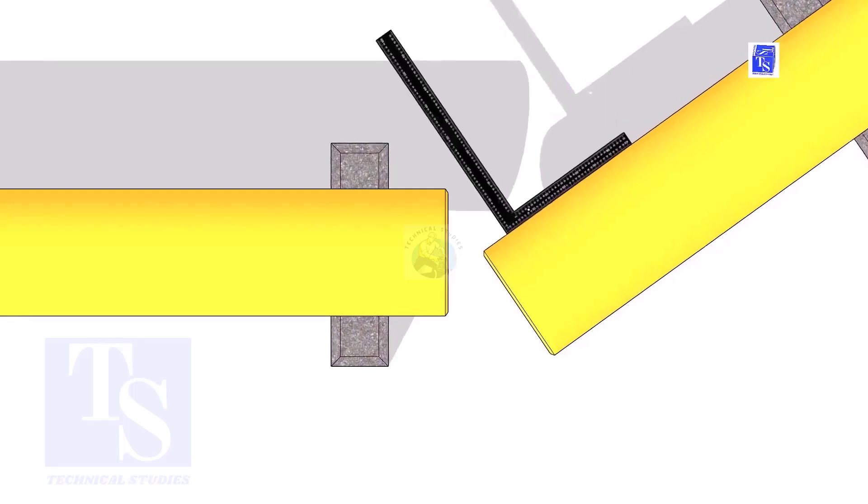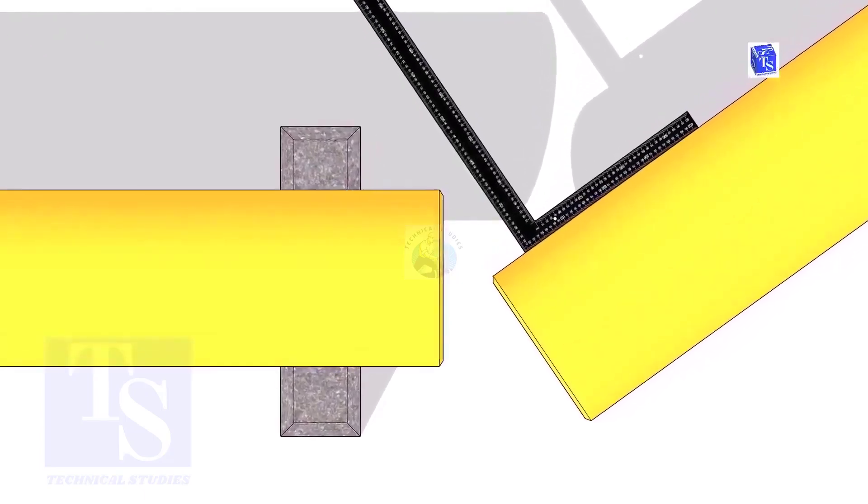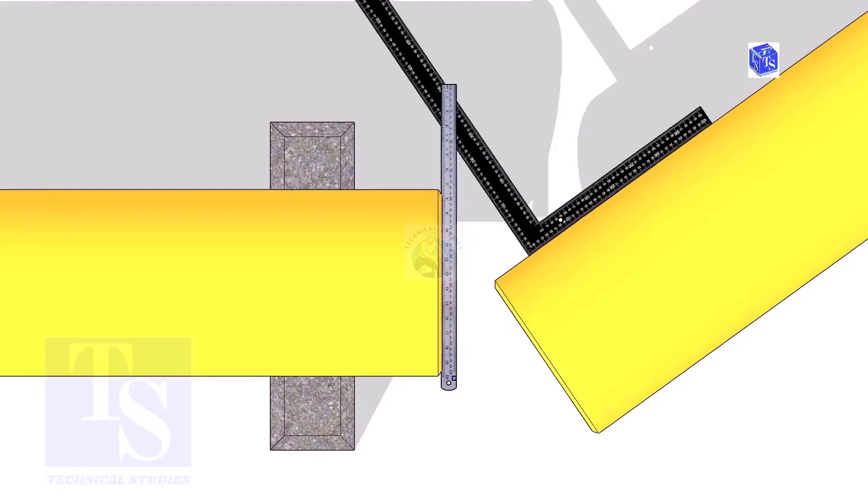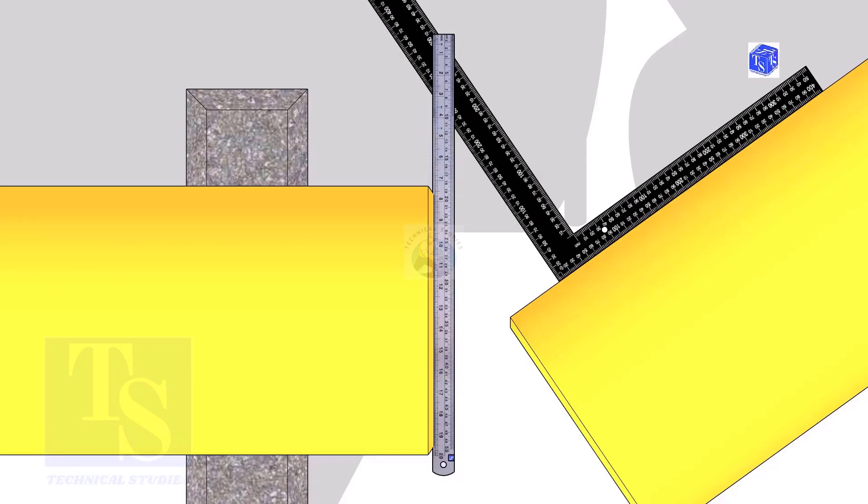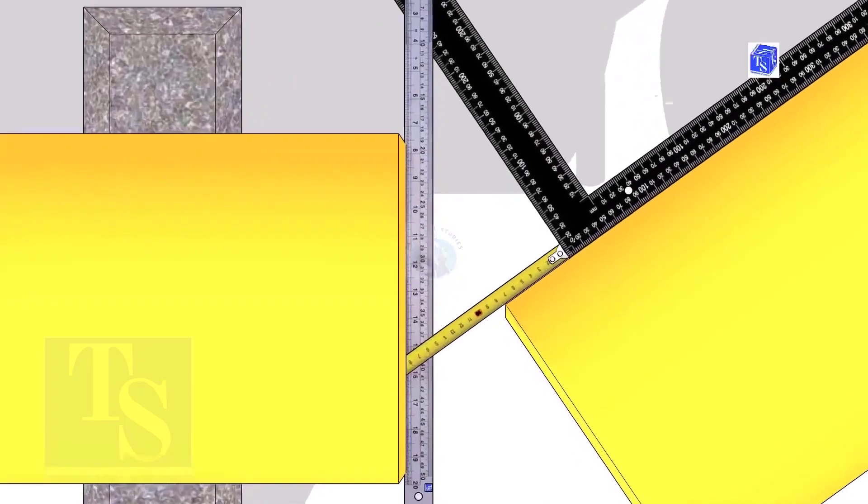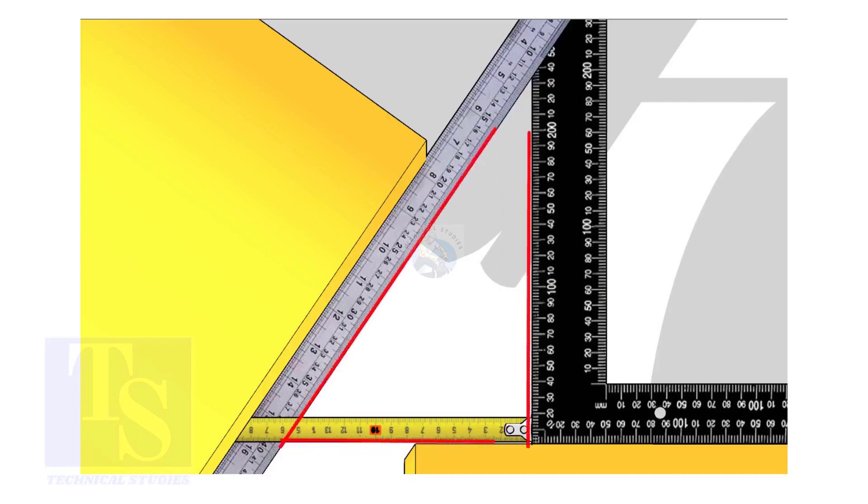Hold a right angle on the pipe as shown. Hold a scale on the other pipe as shown. Measure and note down the dimensions of the triangle.